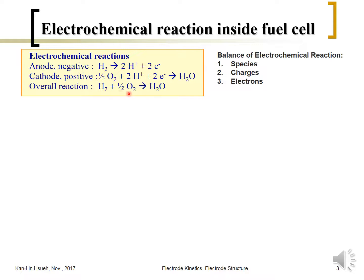The overall electrochemical reaction is hydrogen combined with oxygen to generate water. In this electrochemical reaction we have to maintain the balance of species for a given electrode — the charge balance and the electron balance. This means however many electrons released from the anode should be received at the cathode.